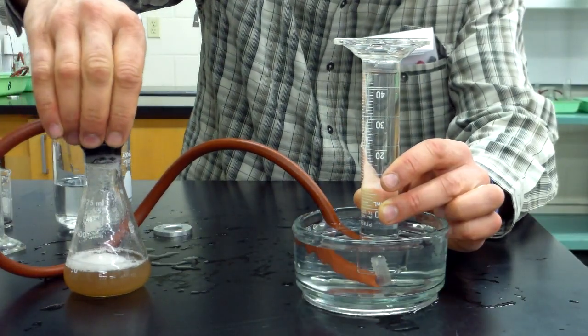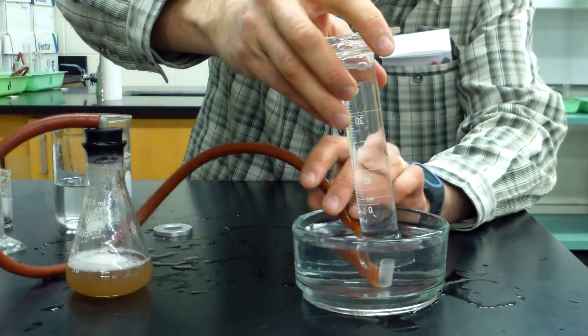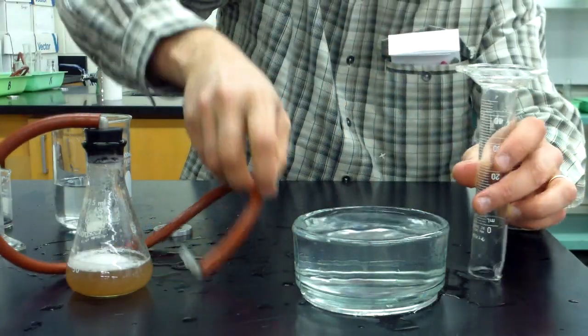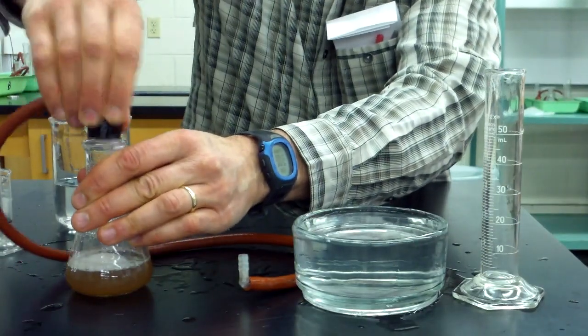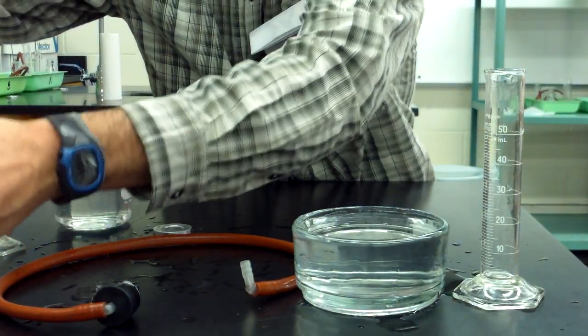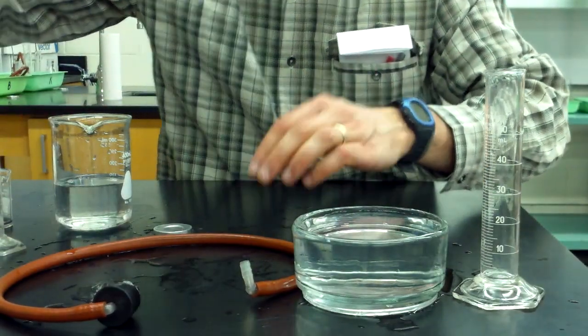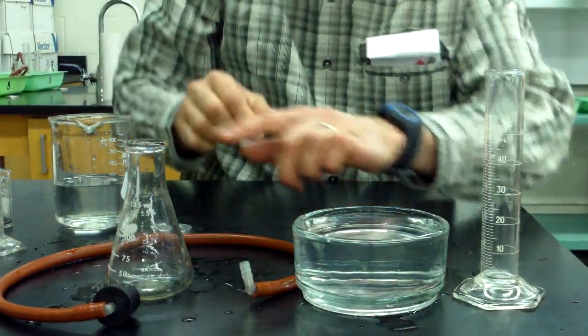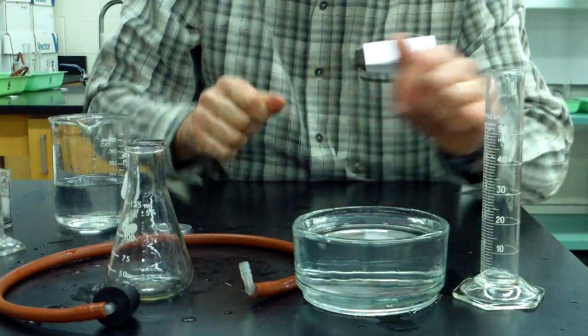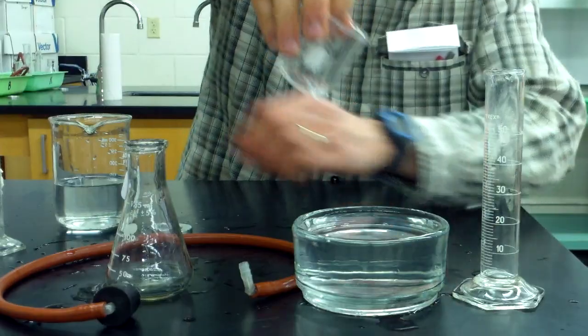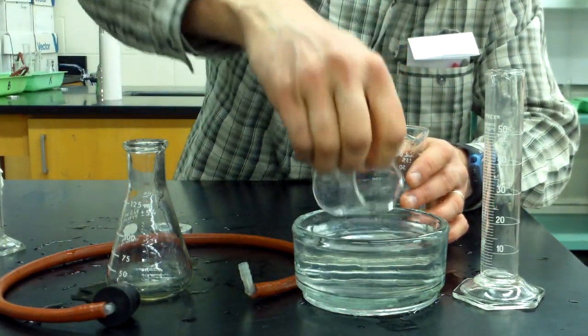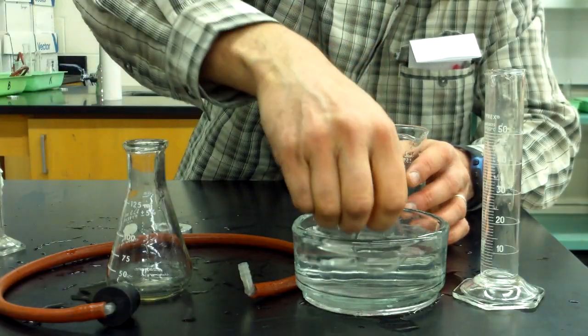Once you're done with that trial, you can take the graduated cylinder off and let the water out. You can take the cork out of your reaction chamber and pour it in the sink. Rinse it out well. And then you're ready for your next mixture of enzyme and substrate. You'd probably have to scoop out some of the water so it doesn't overflow. This is a messy lab, so if you spill a little water, that's okay.